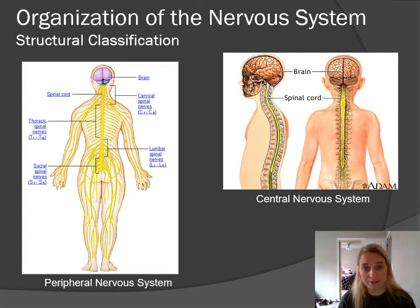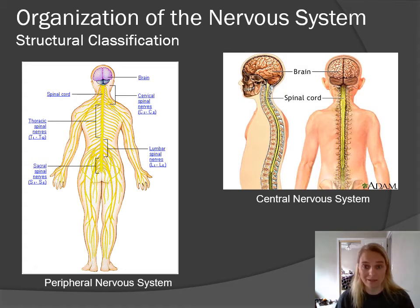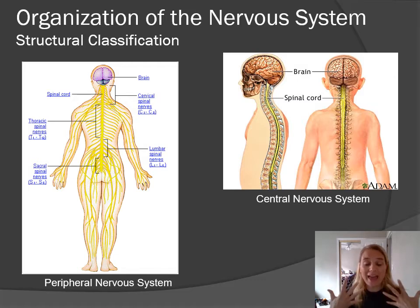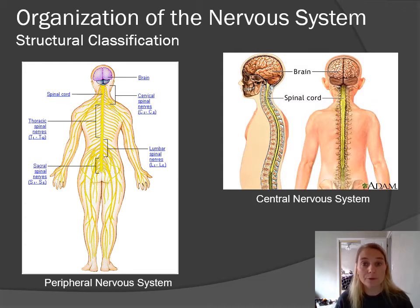The structural classification — and these are going to be separate videos — we have what's called the central nervous system, which is your brain and spinal cord, and that's it. Brain and spinal cord is the CNS, or central nervous system. Then everything else — all the nerves branching off of your brain, all the nerves branching off of your spinal cord, any of the receptors out there off of your brain and spinal cord — this is considered part of the peripheral nervous system, or PNS.